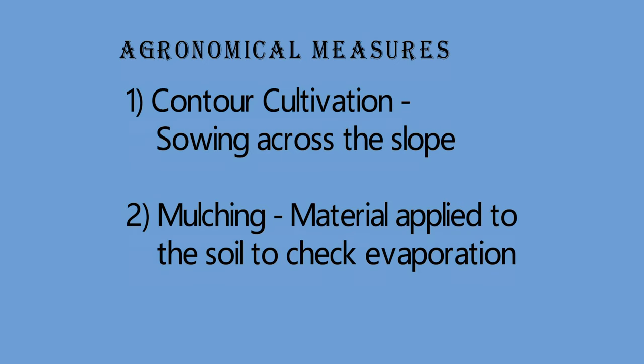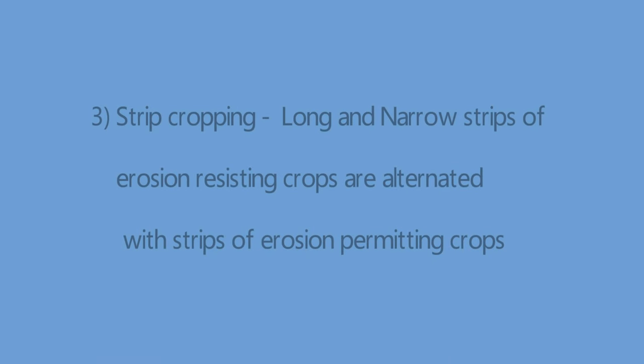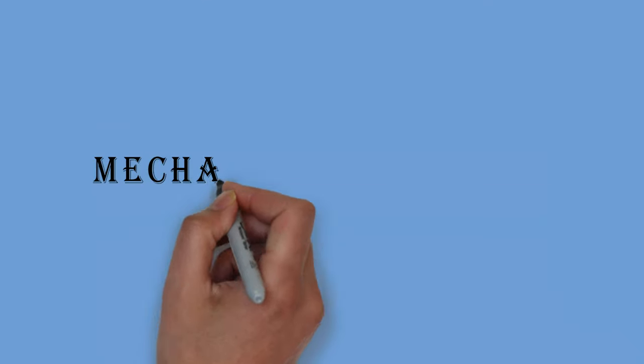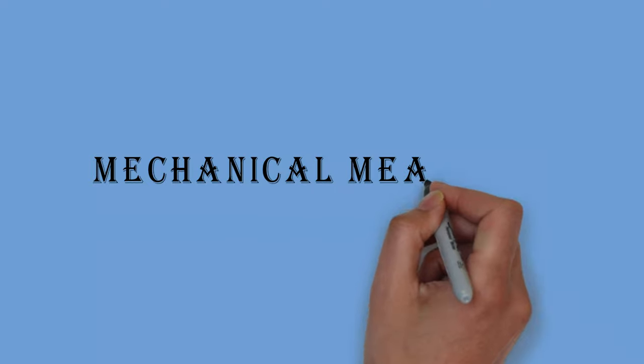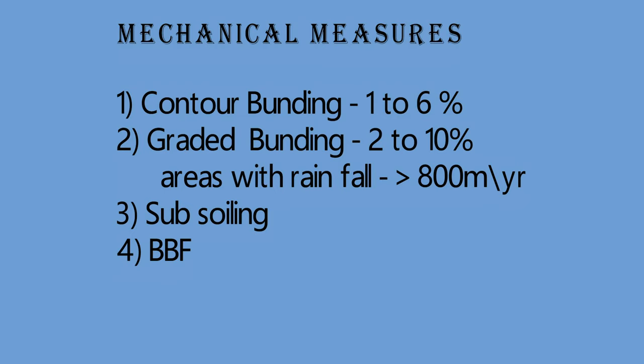Mulching helps in conservation of soil moisture and reduces erosion, mostly used in dry regions. The third agronomical measure is strip cropping — a system where long and narrow strips of erosion-resisting crops are alternated with strips of erosion-permitting crops. There are eight mechanical measures. The first is contour bunding, practiced up to six percent slope. Graded bunding is practiced on slopes of two to ten percent with rainfall of 800 mm per year. Both contour and graded bunding are mostly practiced in India.